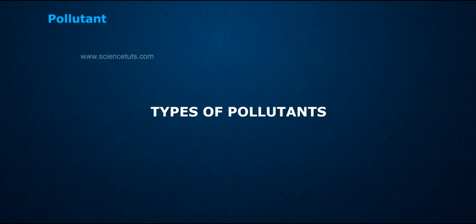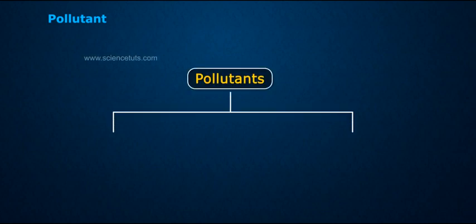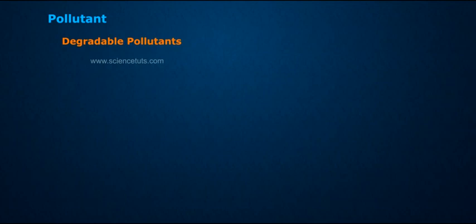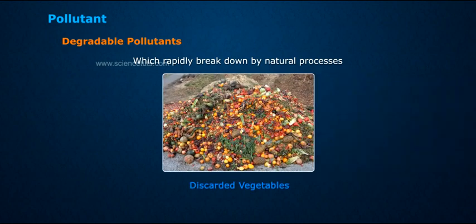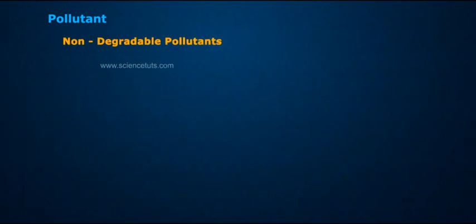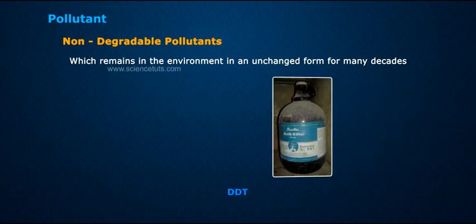Types of Pollutants. Pollutants are of two types: Degradable Pollutants and Non-degradable Pollutants. Degradable pollutants are those which rapidly break down by natural processes — for example, discarded vegetables. Non-degradable pollutants are those which remain in the environment in an unchanged form for many decades, such as DDT.